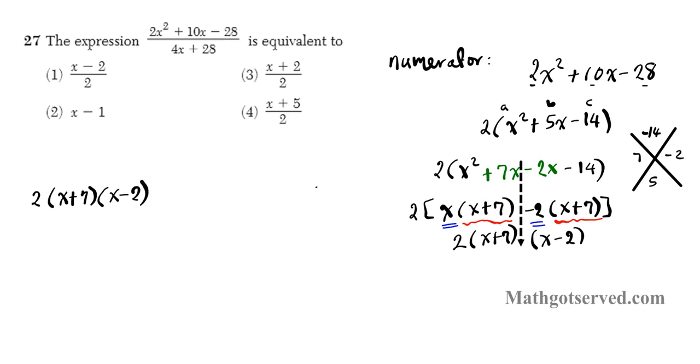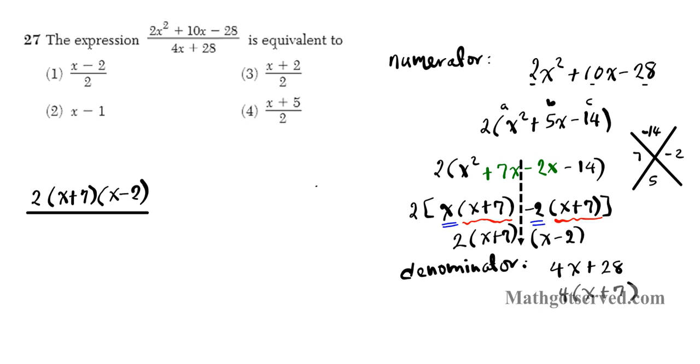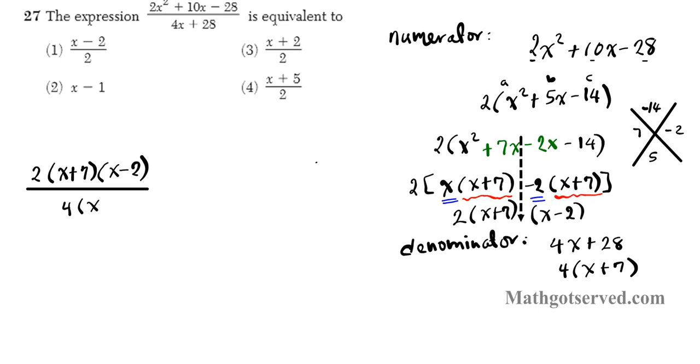So this expression can be written as 2 times x plus 7 times x minus 2 as a numerator. Now in the denominator, what we're going to do is factor it as much as we can. In the denominator we have 4x plus 28. So I can factor out 4 since it's a common factor of these two. Take out 4, we're left with x plus 7. So there goes the factored form of the denominator. So let's put it back in. We have 4 times x plus 7. Now it's easy for us to see what the common factors are so we can reduce it. So x plus 7 goes here once, x plus 7 goes here once, 2 goes here once, 2 goes here twice. Your final answer is x minus 2 over 2.